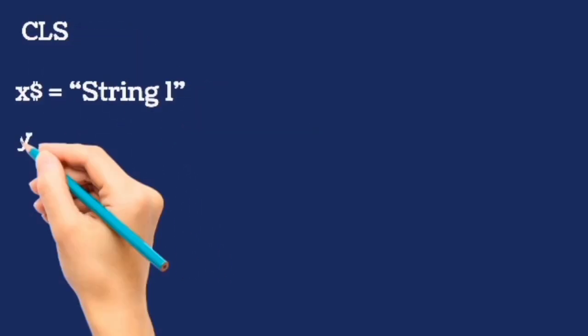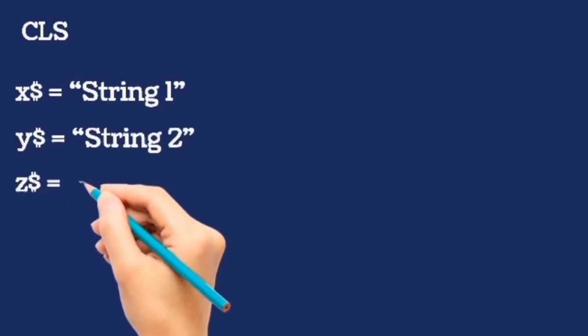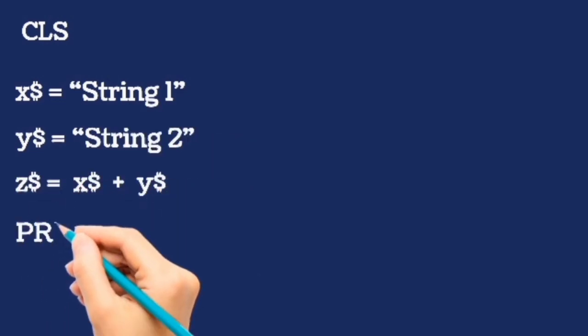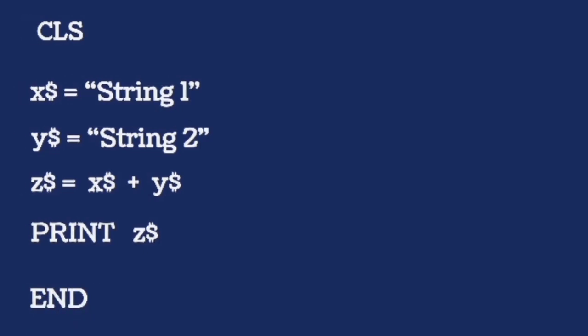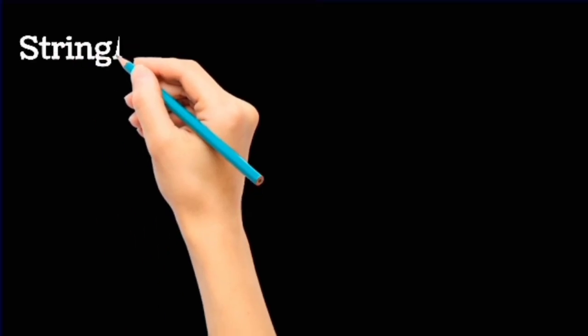Addition of variable strings or summation of variable strings together. CLS. X string equals string 1. Y string equals string 2. Z string equals X string plus Y string. Print Z string. Therefore, X string plus Y string, which is string 1 plus string 2, equals string 1 string 2.